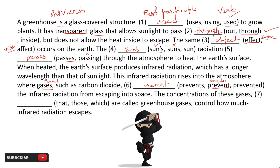Next blank: 'The concentration of these gases [blank] are called greenhouse gases, control how much infrared radiation escapes.' The options are: that, those, which. For non-living things like gases, we always use 'which', not 'that' or 'those'. Also, 'which' is used when you are adding extra information — 'the concentration of these gases, which are called greenhouse gases' — this is extra/additional information. So 'which' is the correct answer.